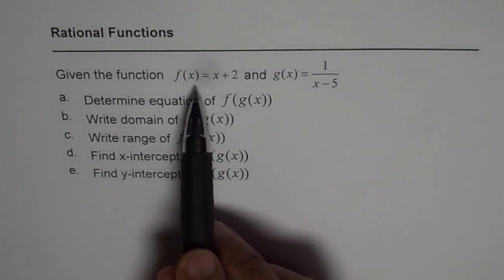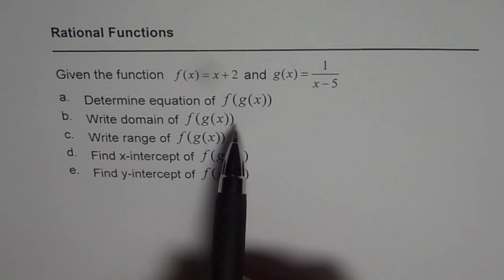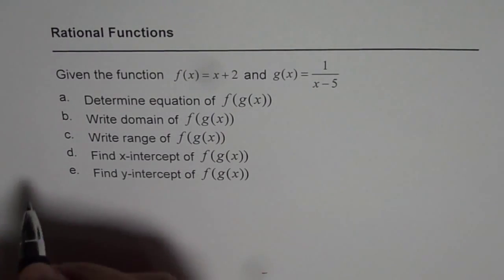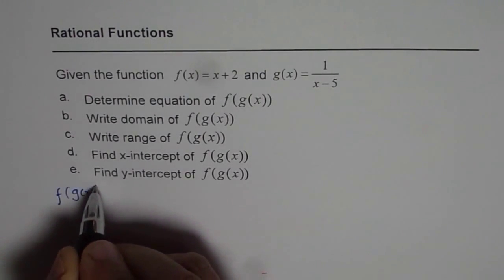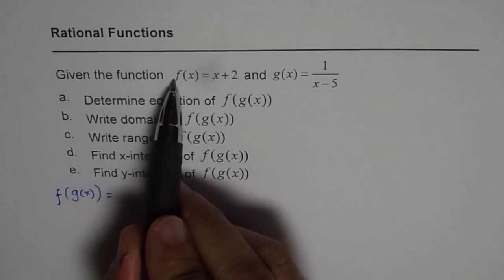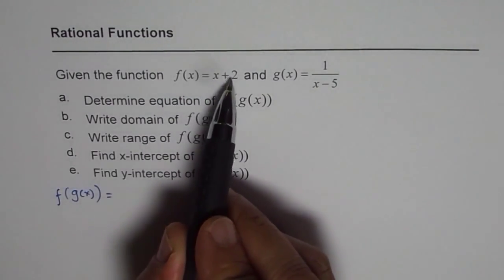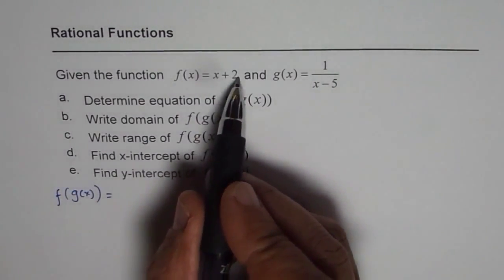Now, let's understand what is composite function and how to find f of g of x. When we say f of g of x, it really means that the function f of x equals x plus 2. So f of x is x plus 2.